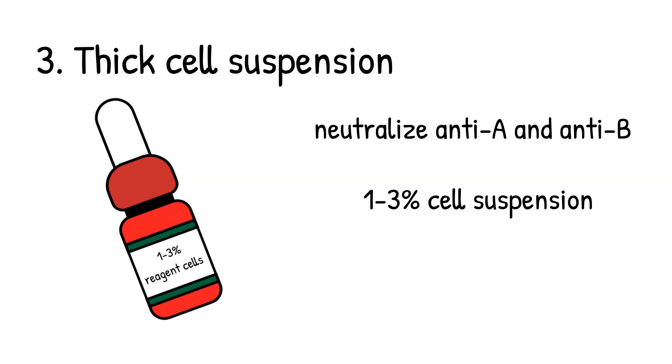A quick and easy reference is by looking at the A1 cell bottle. You can mix the A1 cells bottle to a homogeneous mixture. That mixture is about three percent cell suspension. So compare the two solutions and make sure that it is about the same concentrations before using your cell suspension for ABO typing.